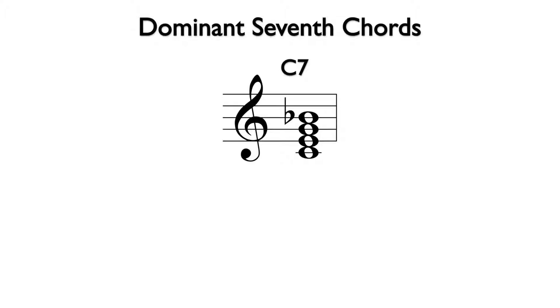The notes of C7 are C, E, G, and B flat.